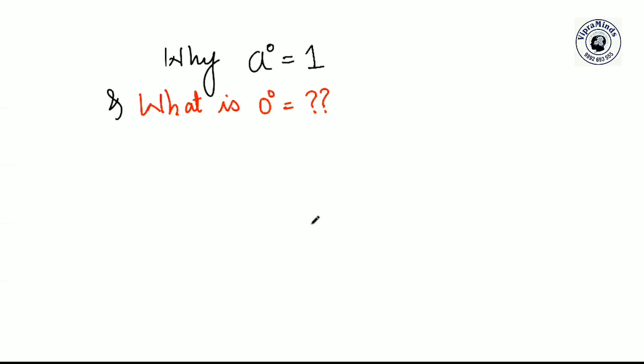In our Exponents and Powers chapter, we always study the rule that any number raised to 0 equals 1. We represent this as a raised to 0 equals 1. So 1000 raised to 0 is equal to 1, 10000 raised to 0 is also equal to 1, minus 2 raised to 0 is also equal to 1, and 3 by 4 raised to 0 is also equal to 1. Whether you take a positive number, a negative number, a fraction, or a decimal — any number with power 0 equals 1, except 0 raised to 0.